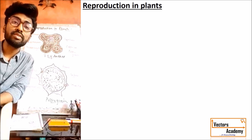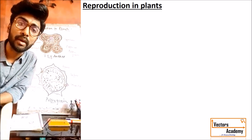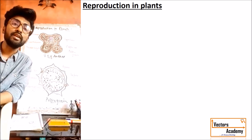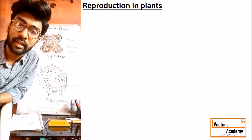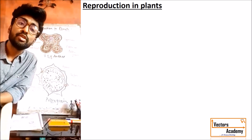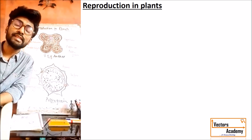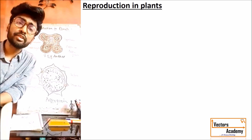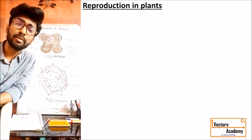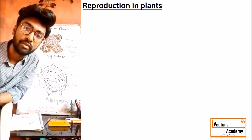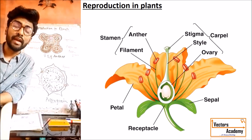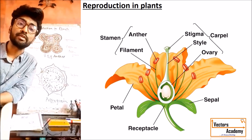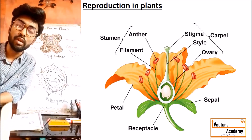Today we are going to start with reproduction in plants — the unit on sexual reproduction in plants. In 11th standard we studied about the flower. The basic unit for sexual reproduction in plants is the flower. Flower is defined as a highly modified shoot region especially produced for the process of sexual reproduction.